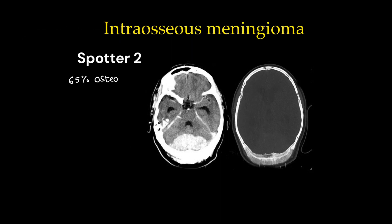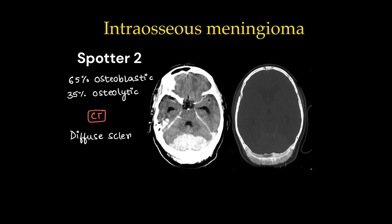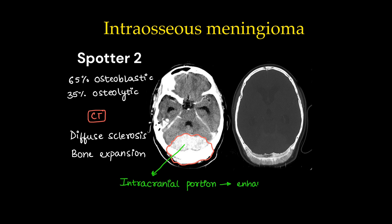Spotter 2: This is a case of intraosseous meningioma. 65% of intraosseous meningiomas are osteoblastic and 35% are osteolytic. CT shows diffuse sclerosis and bone expansion. Here we can see this contrast-enhanced CT showing the intracranial portion of the meningioma with enhancement. In the bone window we can also see the sclerotic bone.